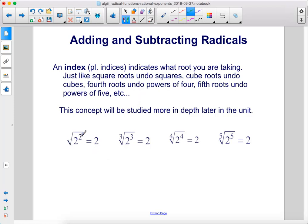So the square root of 2 squared, this will cancel with this leaving us with 2. For the cube root of 2 to the third power, the cube root cancels out with the third power leaving us with 2.